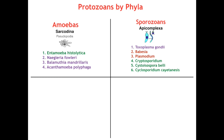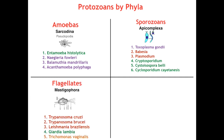Our third phyla is our flagellates, a.k.a. mastigophora, of which there are five. The first three — Trypanosoma cruzi, Trypanosoma brucei, and Leishmania — actually all belong to the same family. Fourth is Giardia, and fifth is Trichomonas vaginalis. And finally, the easiest one: ciliates, or ciliophora. The one and only pathogenic ciliate that we need to know is Balantidium coli — not to be confused with E. coli.